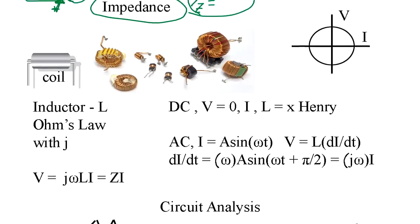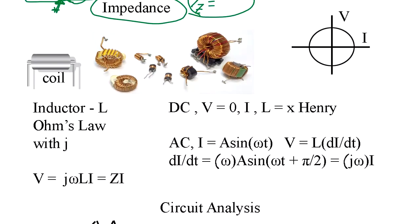Now we come to the inductor. It's the same problem happen. This doesn't make sense in DC because the voltage across inductor is zero. And we use Henry. We want to use Ohm's law somehow with j. Can we do that? Let's try it.